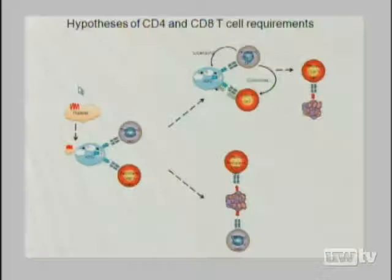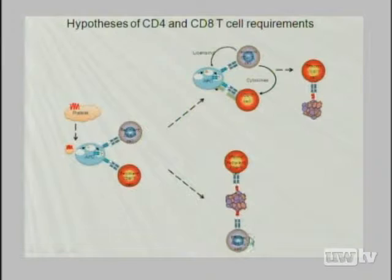If you take mu-MT recipients — mice lacking B cells and thus unable to make antibodies — these recipients still reject marrow at a similar rate to wild type. So along with the failure to detect antibodies, these mice demonstrate that antibodies are not required for rejection to occur. Both CD4s and CD8s are required. This gives rise to the question of whether the CD8s need help from the CD4s, or whether both independently kill targets — noting that CD8s with viral infections don't require CD4 help for an initial lytic response, but transfusion is a much weaker innate immune stimulus.